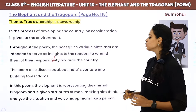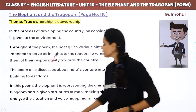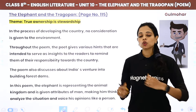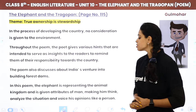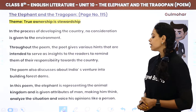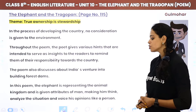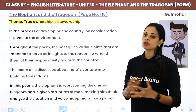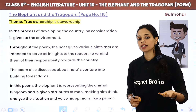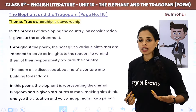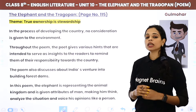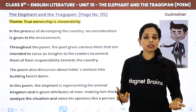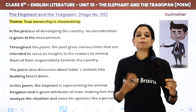The poem also discusses India's venture into building forest dams — how in India, in the process of building dams, we are destroying forests. In this poem, the elephant is representing the animal kingdom and is given attributes of man — making him think, analyze the situation, and voice his opinion like a person. The animals are personified here; only humans can think, speak, and voice opinions, not animals.